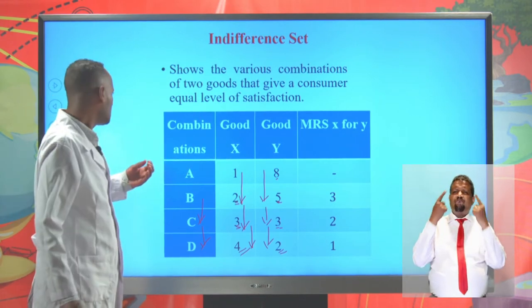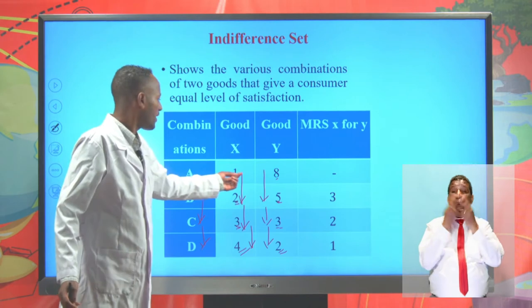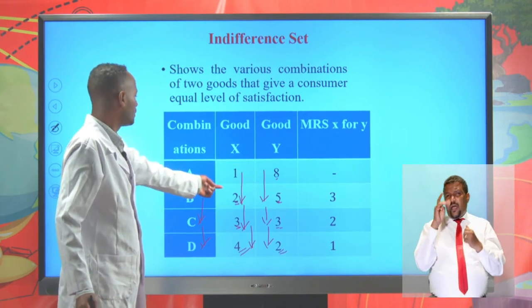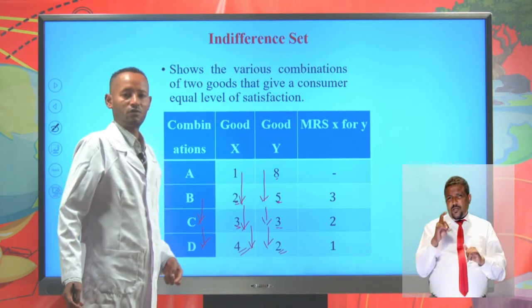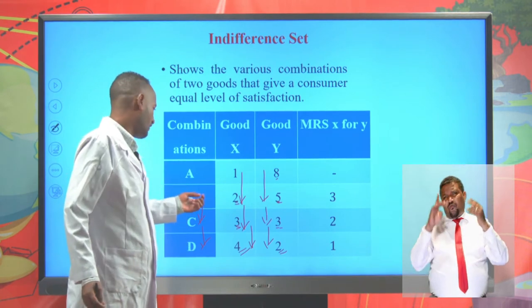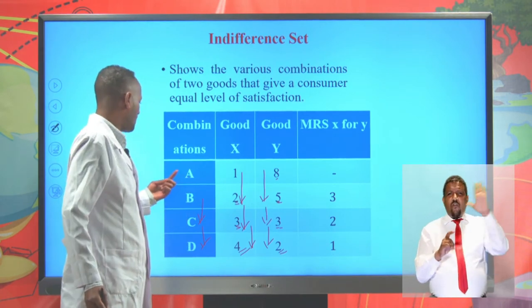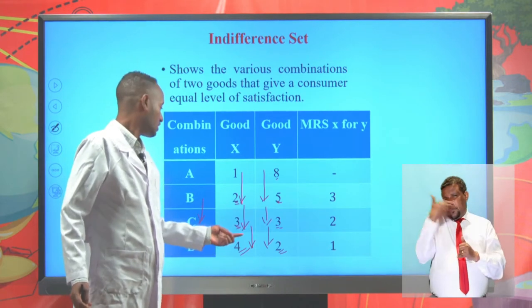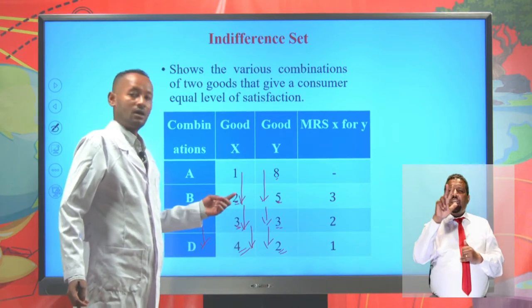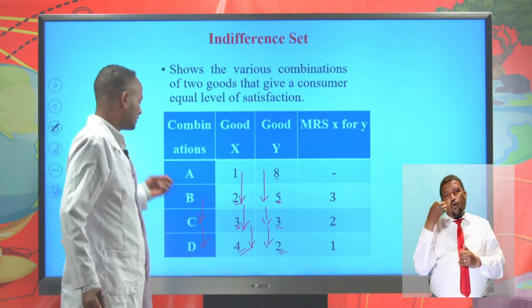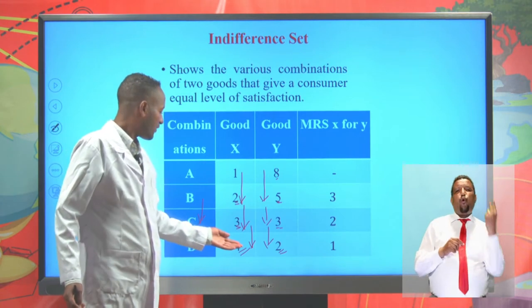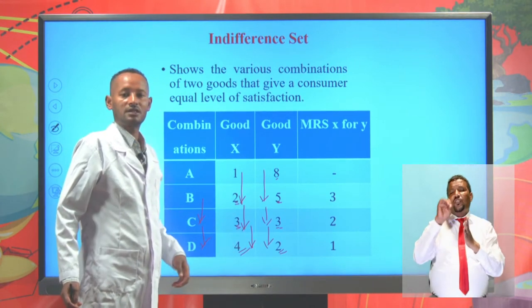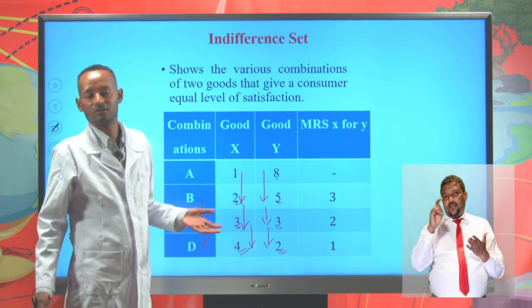Shall I consume one unit of X and eight units of Y, or two units of X and five units of Y? It is better to consume three units of X and three units of Y, or four units of X and two units of Y. In this case, the consumer will be indifferent.